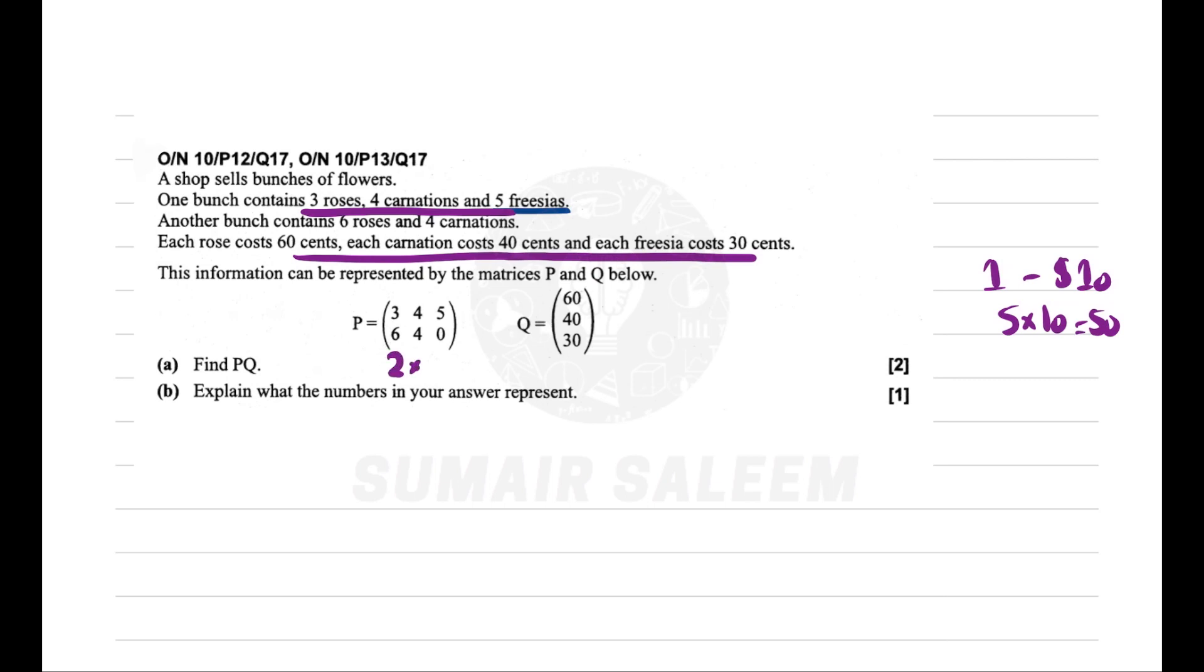Let's multiply. What's the order of this? 2 by 3 and 3 by 1. Is multiplication possible? Yes. Make a smiley face. My answer will be 2 by 1. Let's apply French type: 3 into 60 plus 4 into 40 plus 5 into 30.